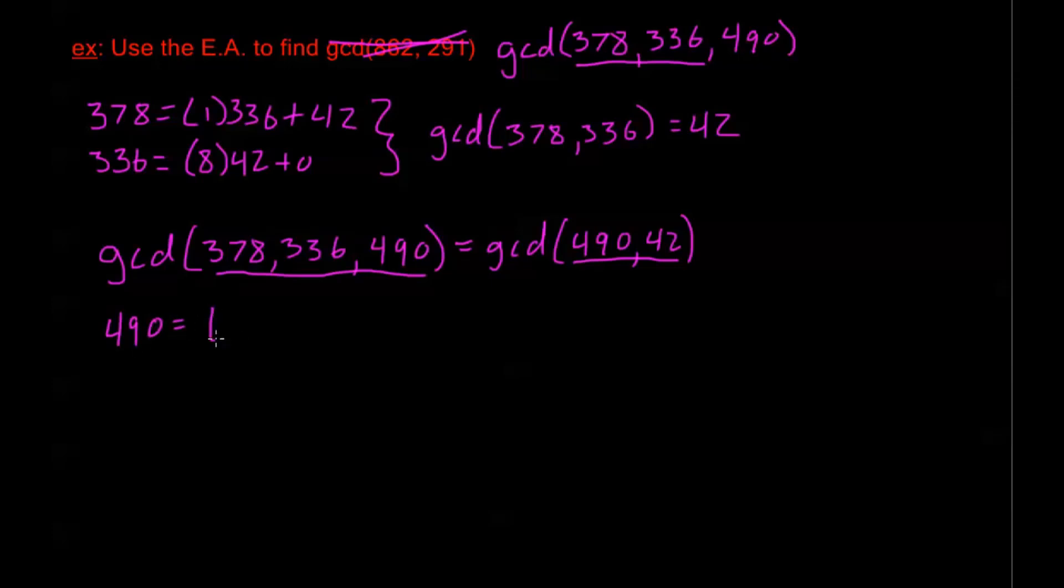490, it's going to equal 11 times 42. That gives us 462, so plus 28. 42 is just 1 of 28, plus 14. And 28 equals 2 times 14, plus 0. So, my GCD of all three numbers is going to be 14.